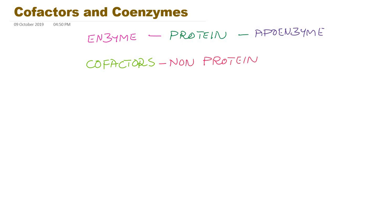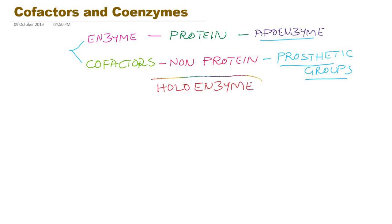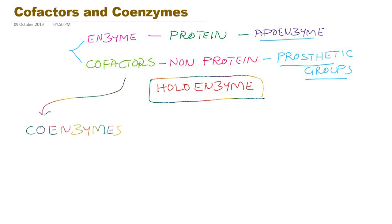This non-protein component of an enzyme can be called a prosthetic group. Together, the enzyme and cofactors — or apoenzyme and prosthetic group — we call it a holoenzyme. Holoenzyme is nothing but enzyme or apoenzyme plus non-protein component or prosthetic groups. The prosthetic groups are collectively called cofactors, and these cofactors could be coenzymes or metal ions.